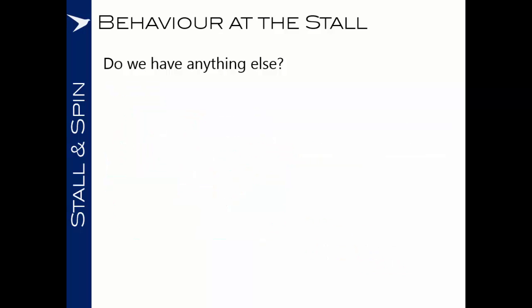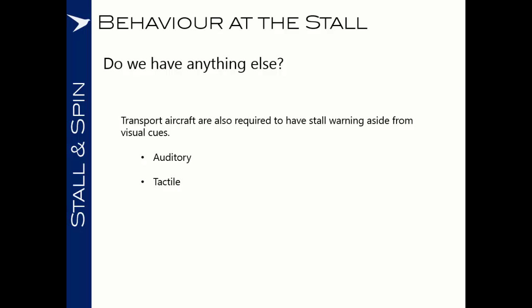Beyond visual cues, transport aircraft are required to have stall warning that includes an auditory warning and tactile feedback. There may be a voice or alarm warning of an impending stall, usually set to trigger just before the critical angle of attack is reached, and there may be a stick shaker or stick pusher providing tactile feedback. The onset of any of these is an indication not to continue increasing the angle of attack.